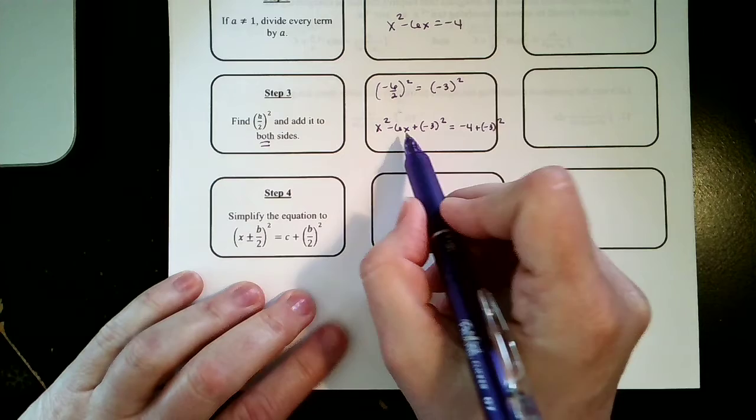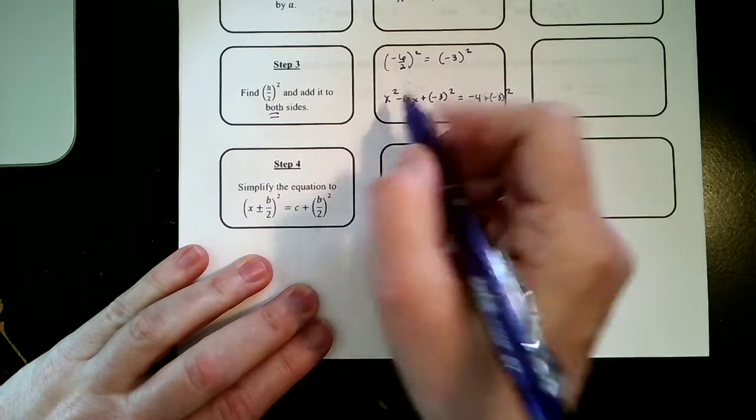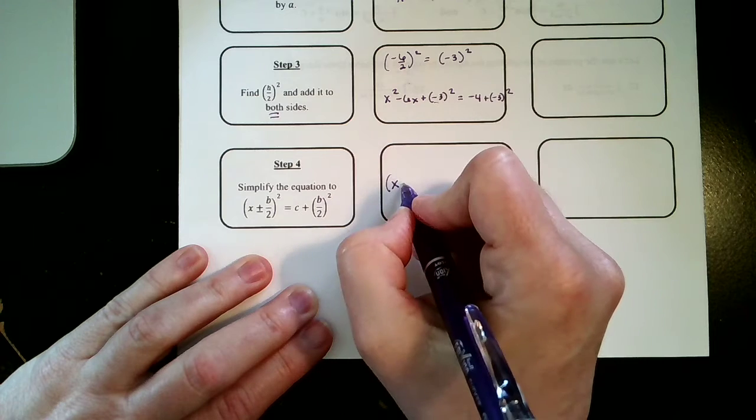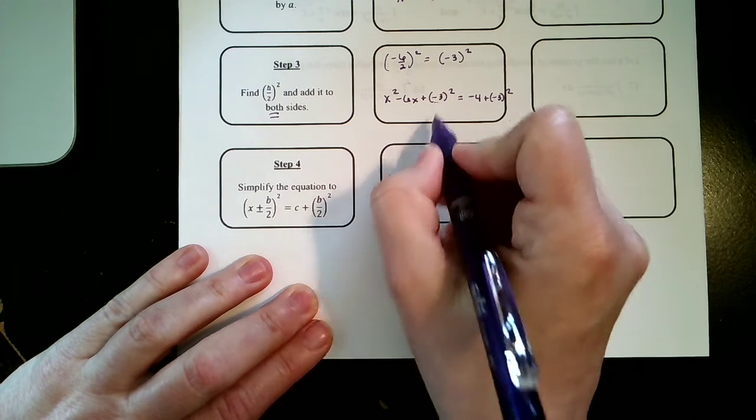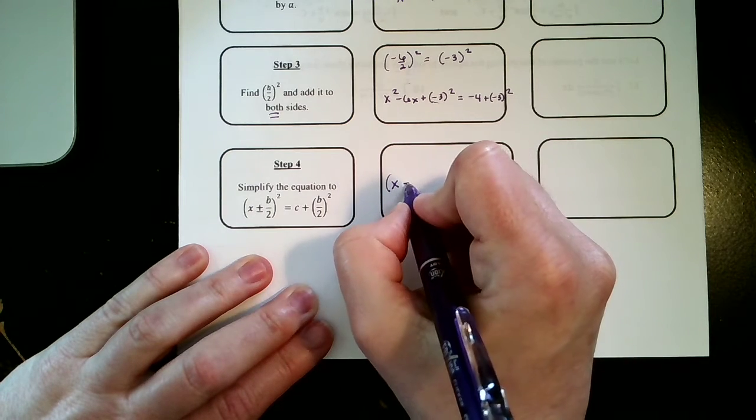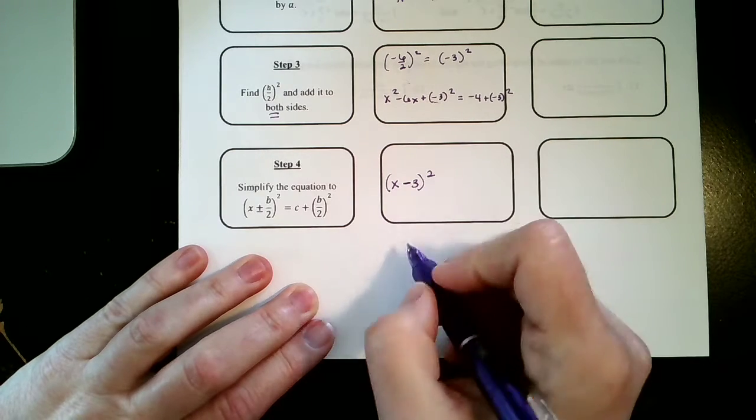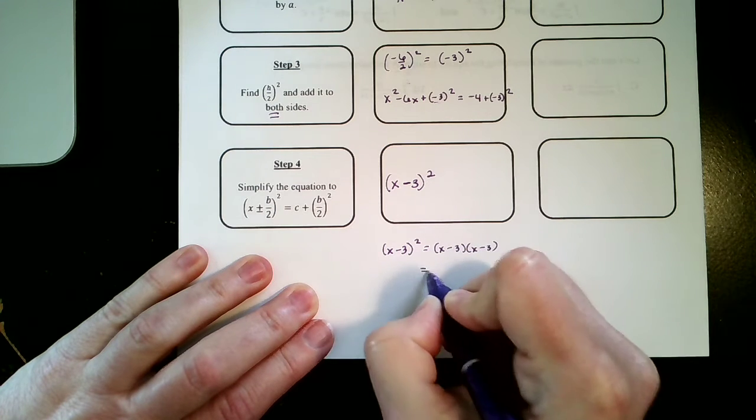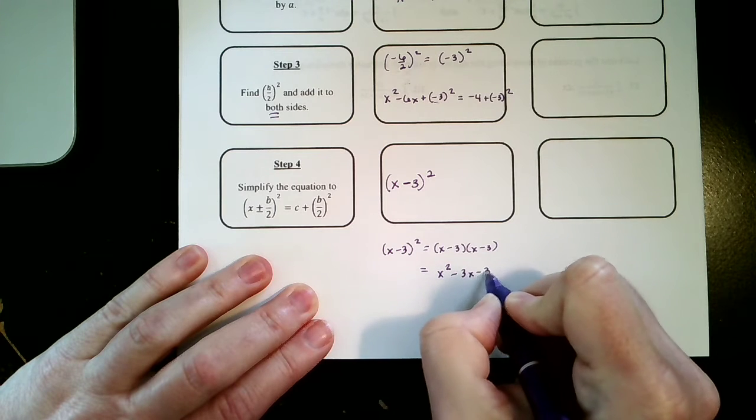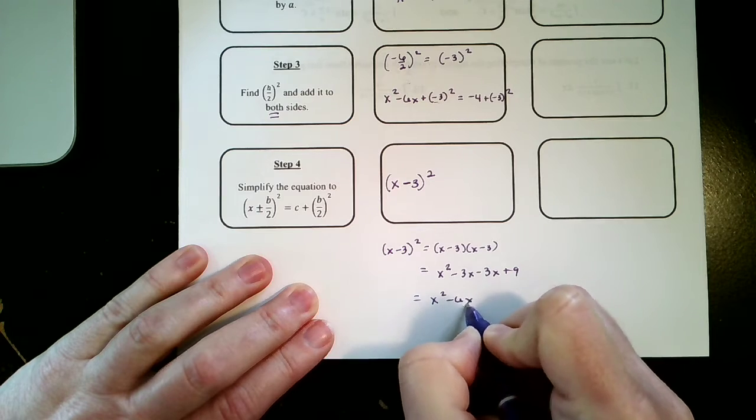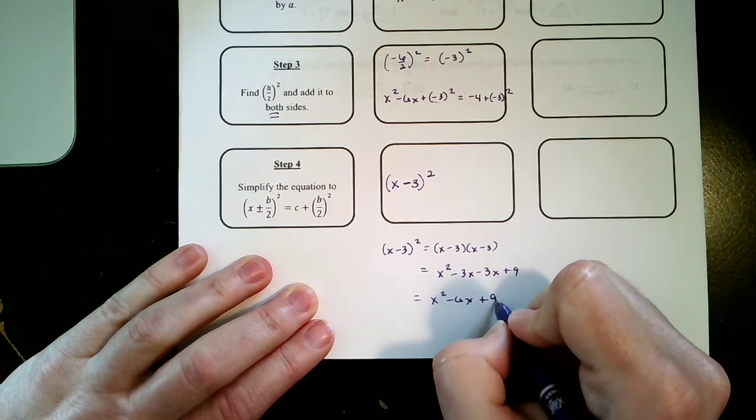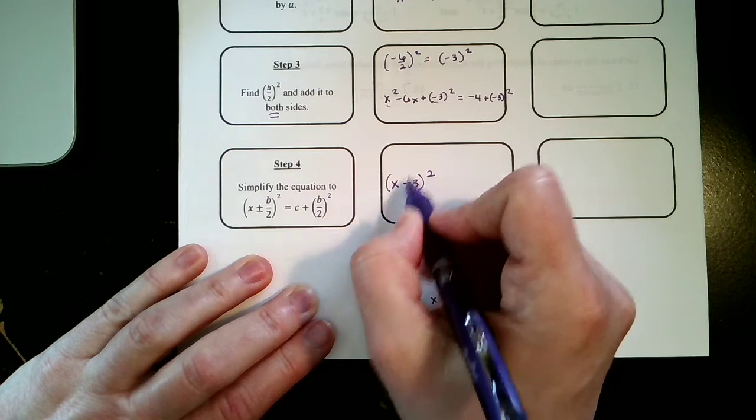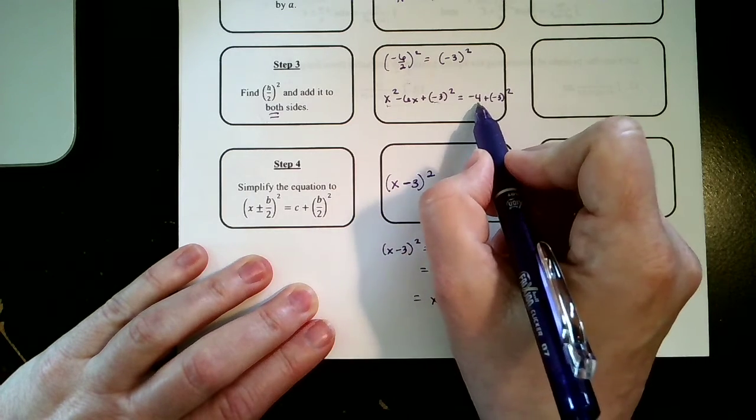Now here's why I did not actually make that a 9. We can factor this thing into a perfect square binomial. Whatever this number is in the parentheses here, if this was a plus 3 I would write plus 3 here. So this is a -3. This (x - 3)² means (x - 3)(x - 3), which if you foil it out gives you x² - 3x - 3x + 9, which is x² - 6x + 9. On the other side, -4 + 9 is 5.